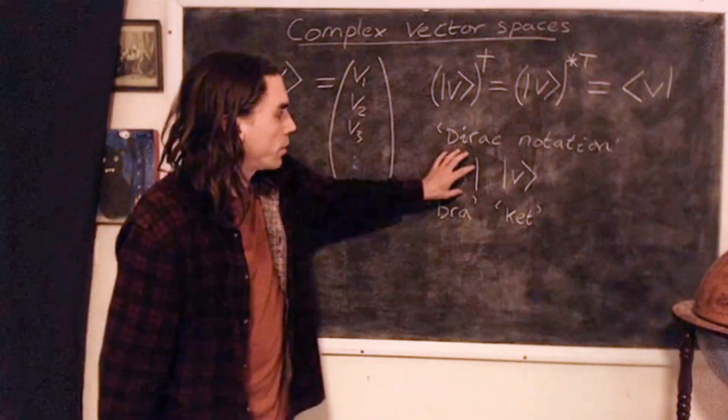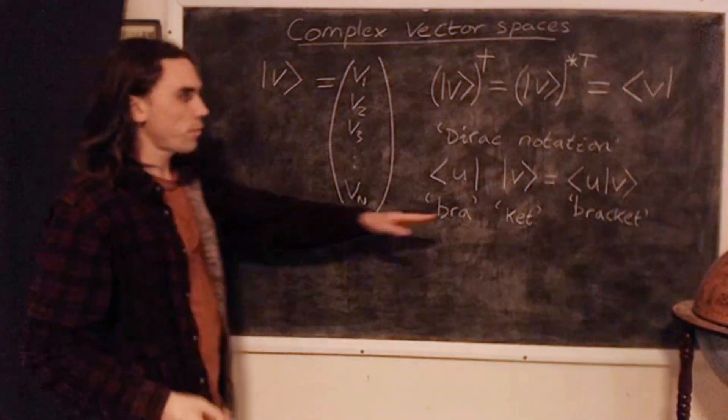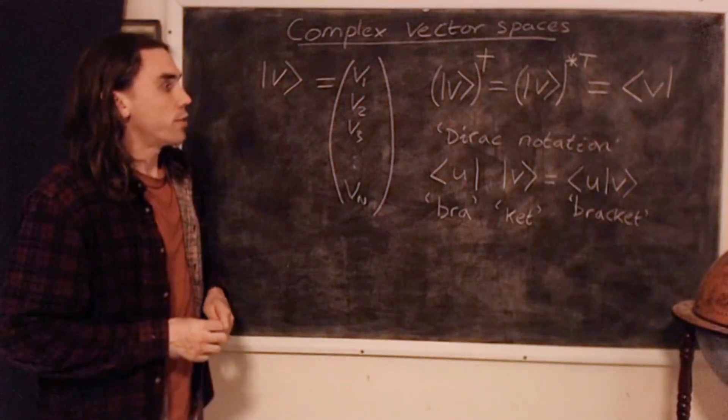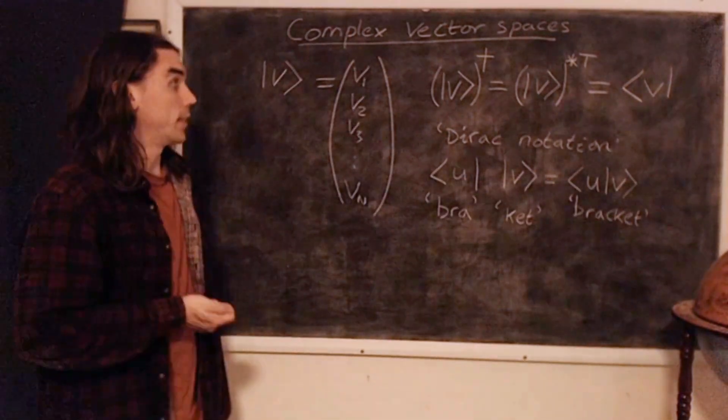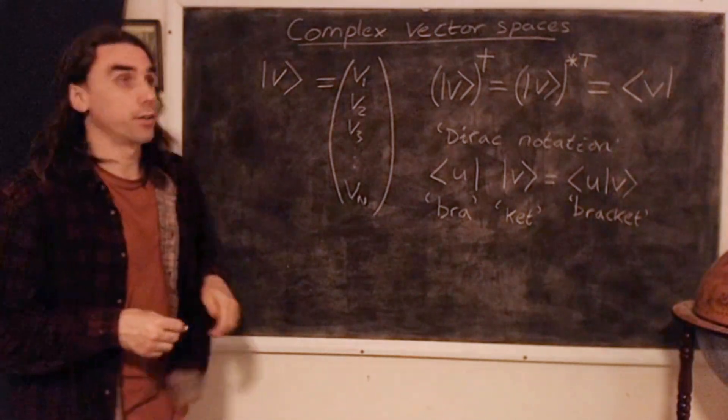So that together, when we put a bra followed by a ket, we get a bracket, or bra-ket. So the use of this is that this object naturally defines an inner product, a dot product between the vector and its Hermitian conjugate. So let's take a look at that on the next board.